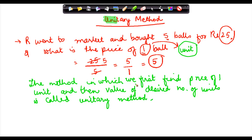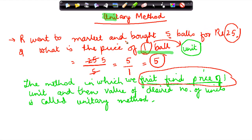So in the method the first thing that we do is we find the price of one unit. In my example I find out the price of 1 unit and what was that 1 unit here, it was 1 ball. After getting the price of one unit it becomes very easy.